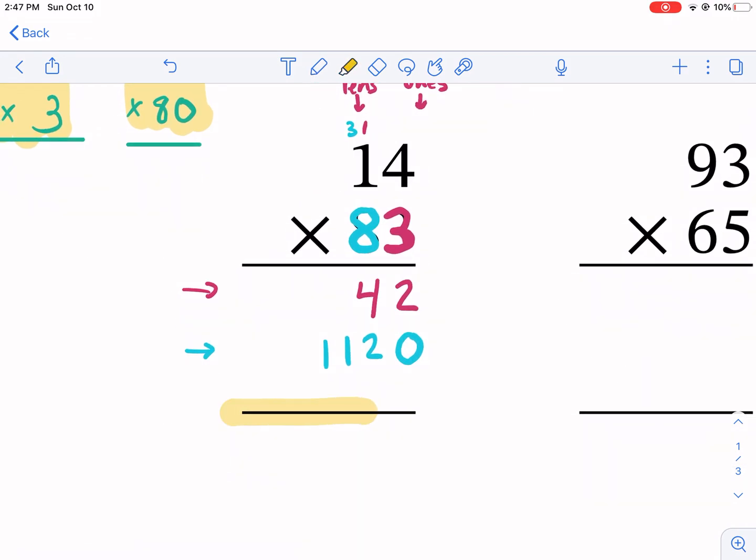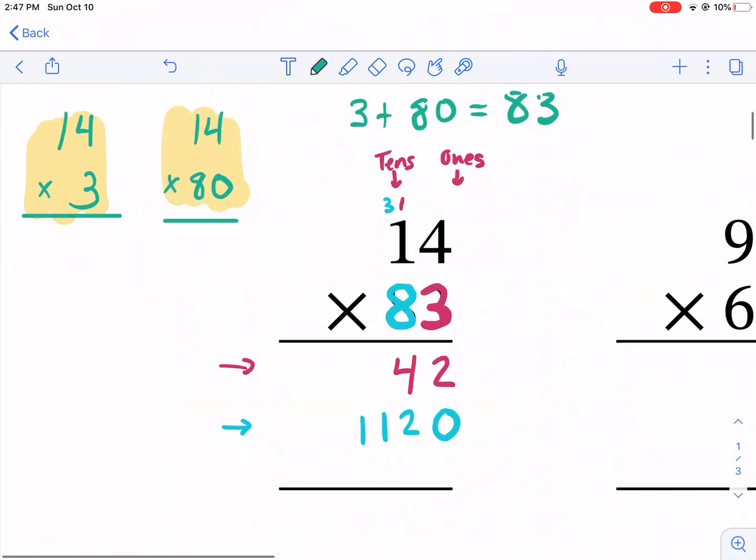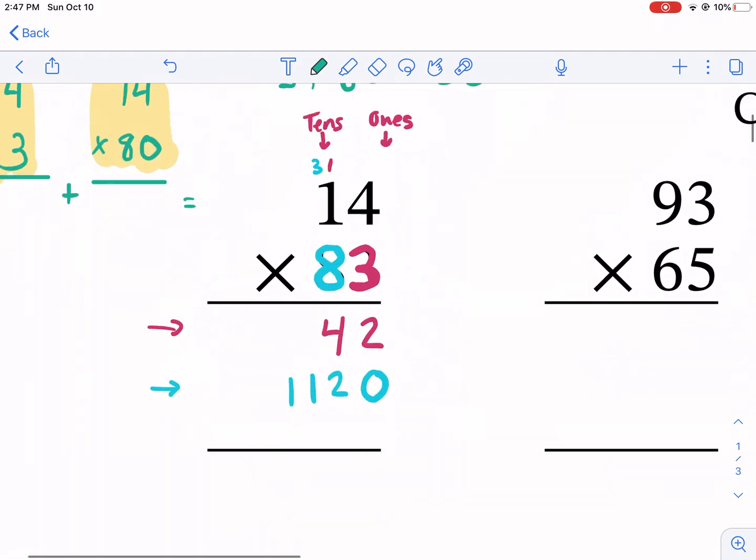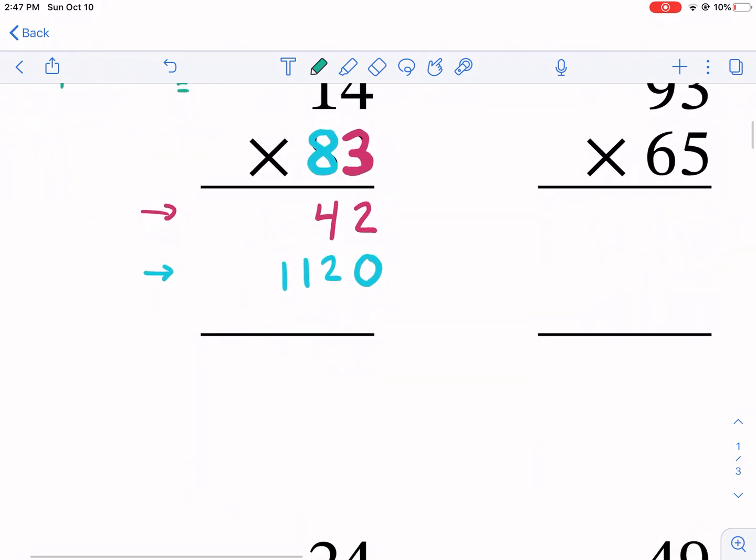Now, these lines are conveniently already placed here because what we're going to be doing is we're going to be adding now. So I need to add these columns together. We're going to do 14 times three plus 14 times 80, and then we're going to add the two results together and that will give our answer. So I do two plus zero and that gives me two. Then I have four plus two, that equals six. Then I have just the one and just the one. So my final answer is 1162.